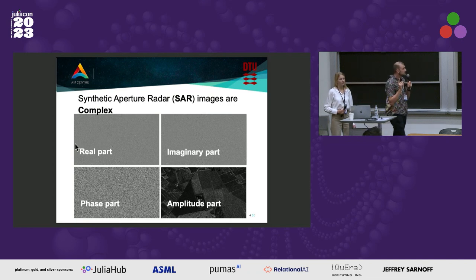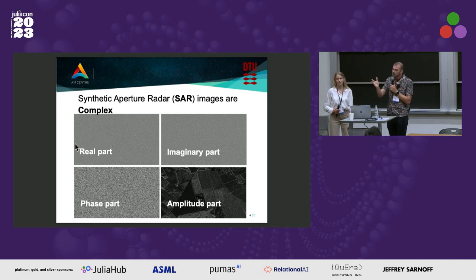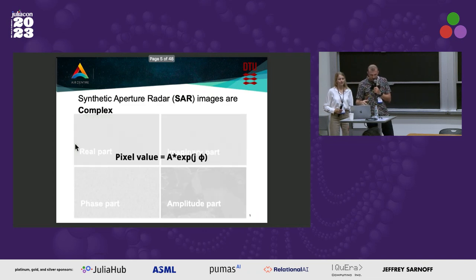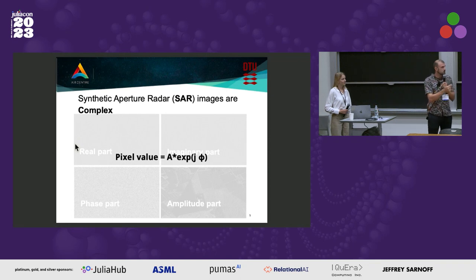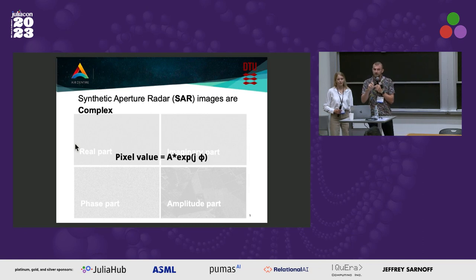By comparing what you sent down to what you receive, you can actually say something about the physical characteristics of the target, such as the geometry, roughness, moisture, and a bunch of other things. SAR data is complex, meaning you are actually getting a real part and an imaginary part. From this you can create an amplitude and a phase image, meaning that in each pixel, for each polarization in your image, you have both amplitude and phase. It takes a bit to fully exploit both of these.